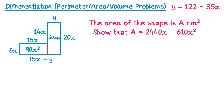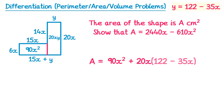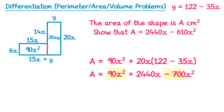So we can write out a formula for the area: the area is 90x squared plus 20xy. Now that wasn't quite what they asked us to show in the question — the difference is our formula has x's and y's in it whereas the one in the question only has x's. Fortunately in the previous part we learnt an expression for y in terms of x: y equals 122 take away 35x. So in our formula we can just substitute y for 122 minus 35x. Now if we expand the bracket and simplify: 20x times 122 is 2440x and 20x times negative 35x is negative 700x squared. Simplifying the two x squared terms we get A equals 2440x take away 610x squared, which is what we were asked to show.